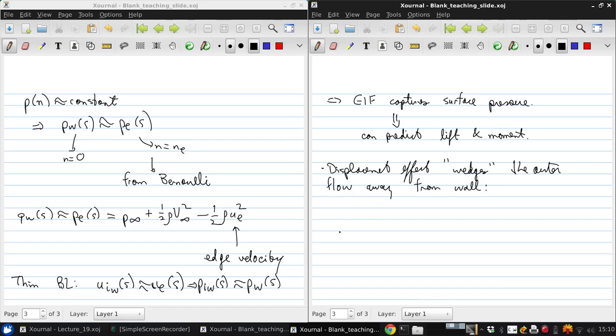It basically wedges the outer flow away from the wall. So we can see that we can add a flat plate starting here where upstream the flow speed is uniform, and then boundary layer starts to grow as the flow moves along the plate, so that at some location here.